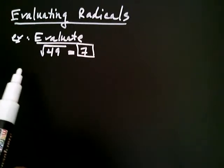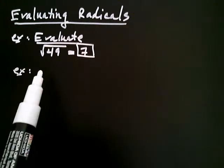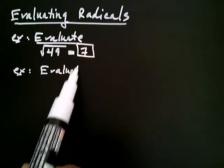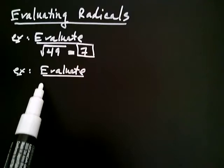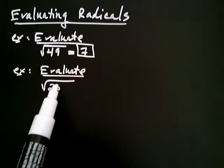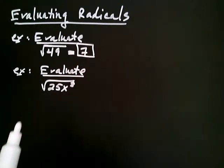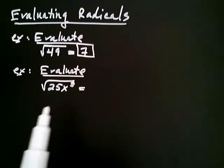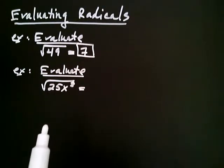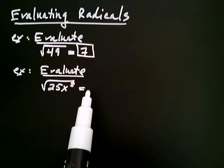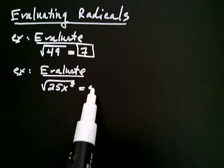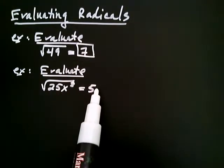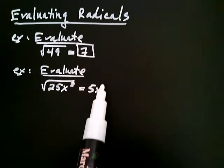What if you have something involving variables? Let's say you're asked to evaluate the square root of 25x to the eighth. I start off thinking about the 25 — can you think of something that you square to get 25? Sure, five. Now, what about x to the eighth? The square root of x to the eighth is going to be x to the fourth.